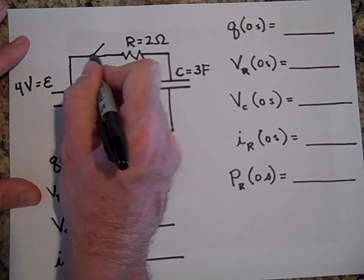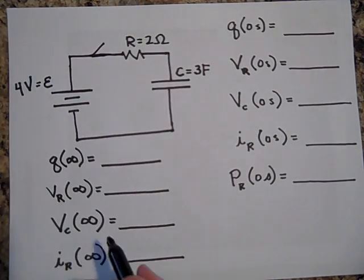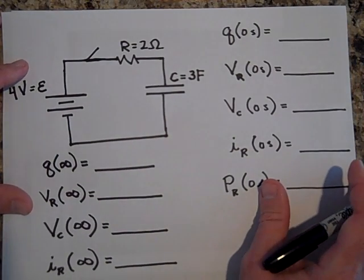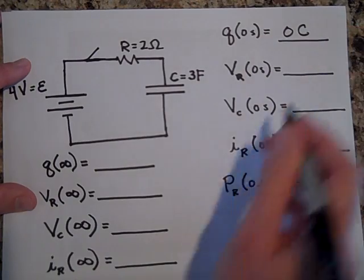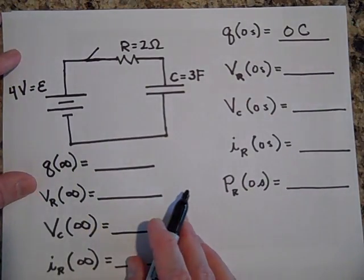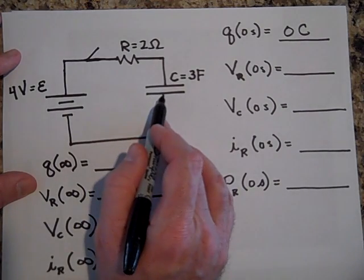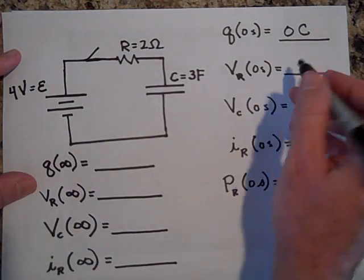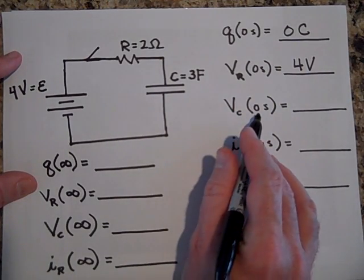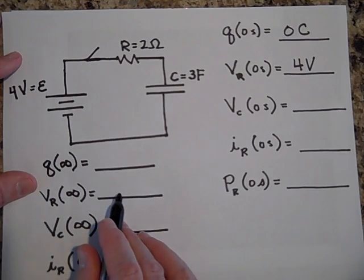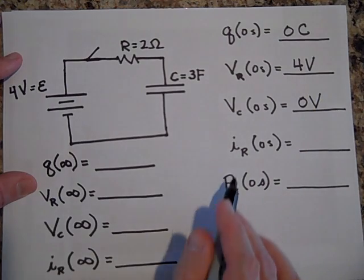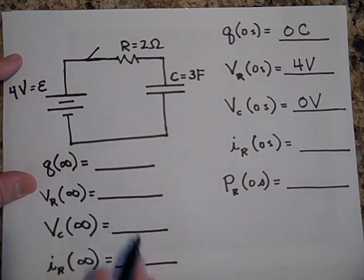When I put the switch down at T equals zero, the instant I put it down, what would be the charge on the capacitor? It'll be zero coulombs. What would be the voltage across the resistor at T equals zero? Well, there's no voltage here. So it's all got to be here. Four volts. What would be the voltage across the capacitor at T equals zero? Well, if there's no charge on it, there's no voltage.